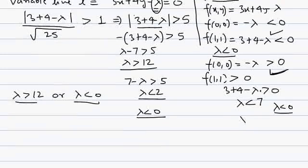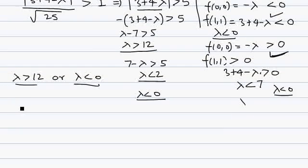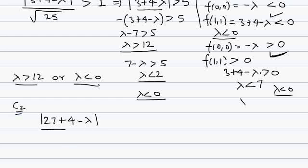Similarly, we consider the second circle C2 and apply the same condition. With C2, the center is (9,1), so we get 27 plus 4 minus lambda mod, divided by root of 25, which should be greater than the radius. This is the second condition: that the line should not meet this circle.